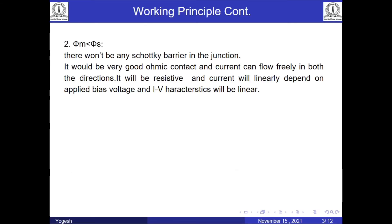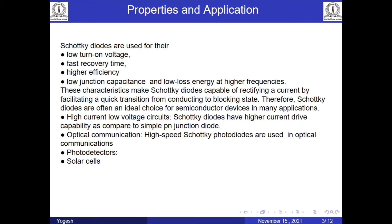Now if the metal work function φ_M is less than the semiconductor work function φ_S, it will be a very good ohmic contact and the same current flows in both directions — forward bias and reverse bias — so the IV curve will be linear.